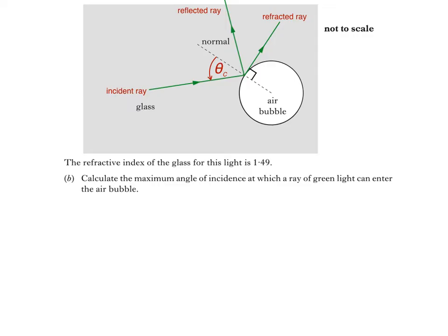This is what we've been asked to calculate. Any increase in the angle of incidence in glass will lead to the ray of light being totally internally reflected, with no light being refracted.